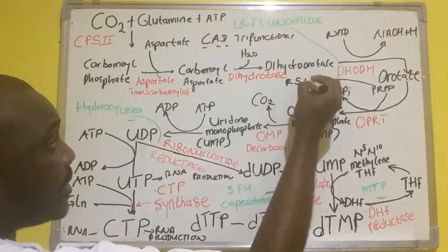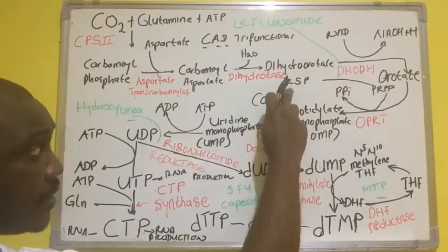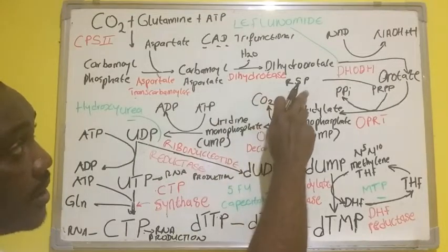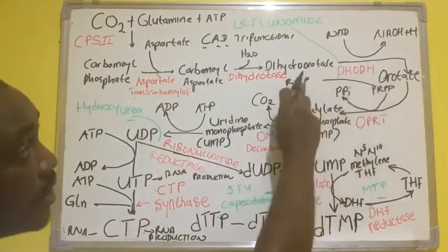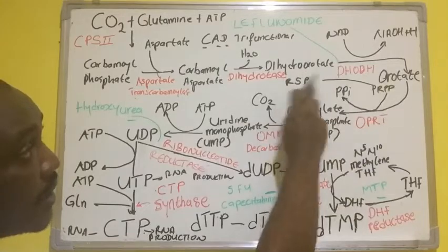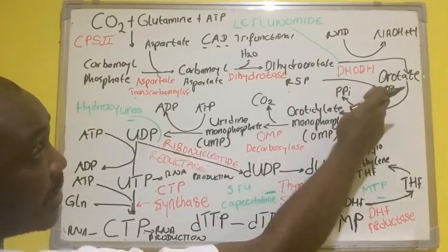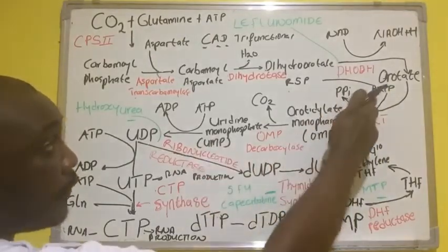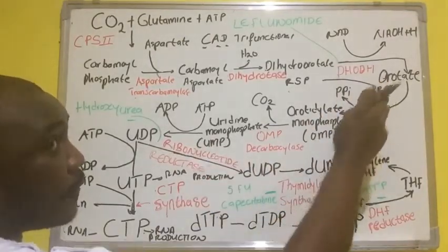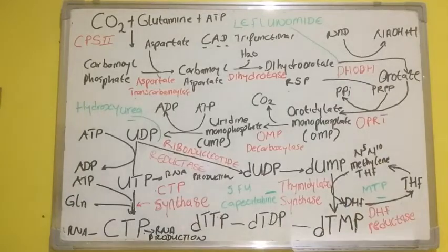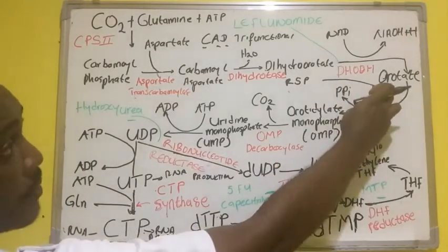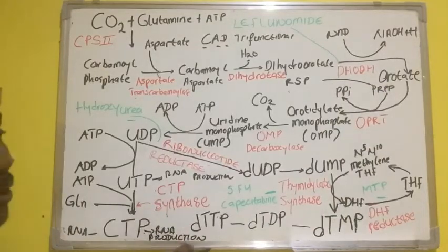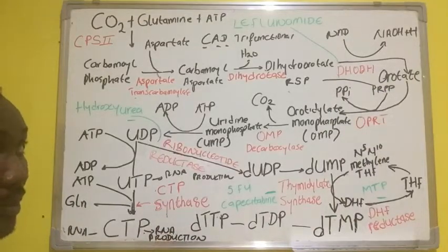Ribose-5-phosphate, through the hexose monophosphate shunt, is being converted to phosphoribosyl pyrophosphate through the enzyme phosphoribosyl pyrophosphate synthetase. From this phosphoribosyl pyrophosphate, it is being converted to IMP, and from IMP it is converted to GMP. This pathway relates to the purine synthesis pathway, which will be covered in a separate video.